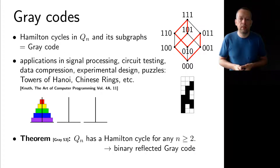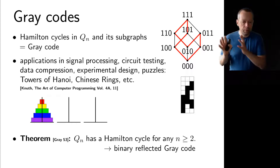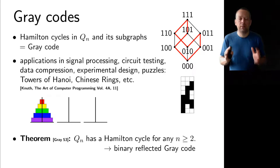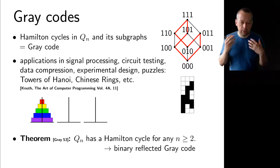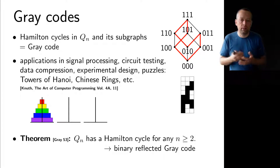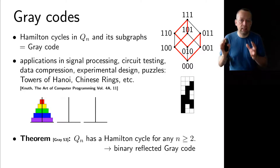The notion of a grey code was named in honor of Frank Grey, who proved the now-folklore result that the cube Qn has a Hamilton cycle for every n at least 2. This particularly nice construction he came up with is sometimes called the binary reflected grey code. In fact, the black-and-white picture shown here is exactly the binary reflected grey code for n equals 3.